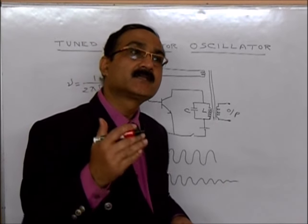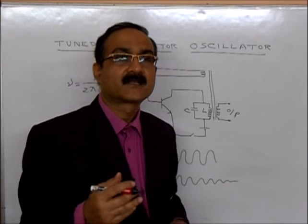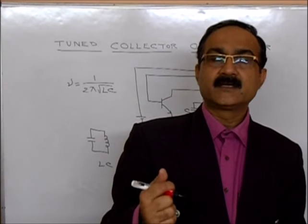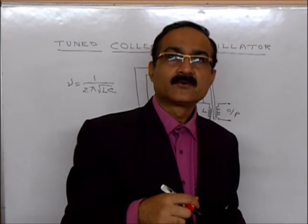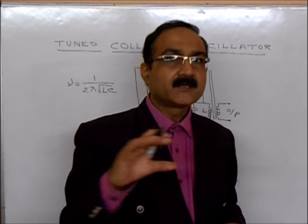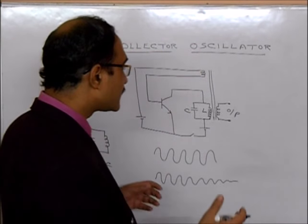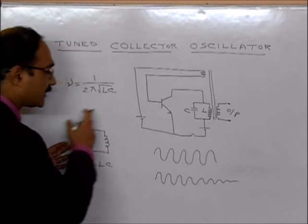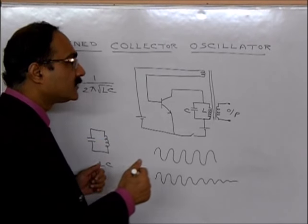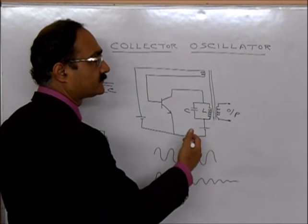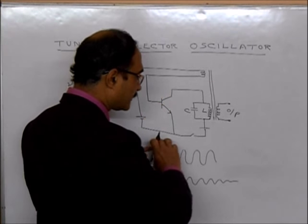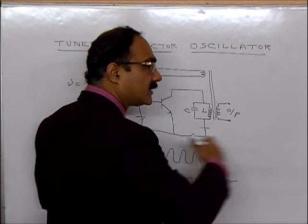In many situations, like radio transmitters or TV transmitters, we need a carrier wave where the amplitude remains constant. In those cases, a simple LC circuit is not sufficient — we need a circuit like this, which produces a wave with constant amplitude indefinitely.